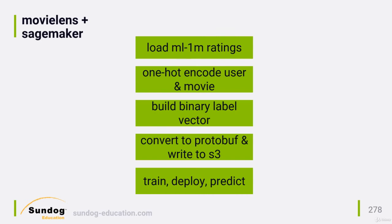Let's walk through how we might use SageMaker to train a factorization machine model on the MovieLens 1 million rating data set. Most of the work is actually in getting the MovieLens data into a format that SageMaker can work with. Factorization machines want to work with high-dimension data sets, so we need to one-hot encode each rating.